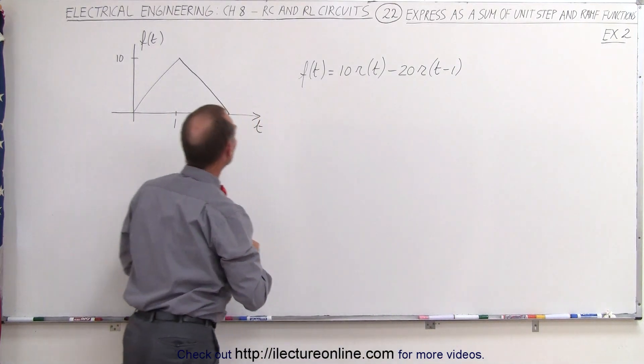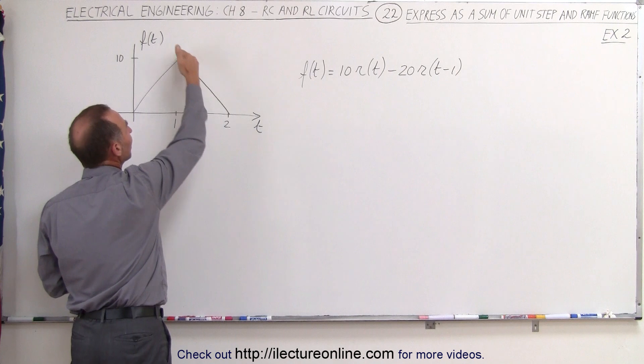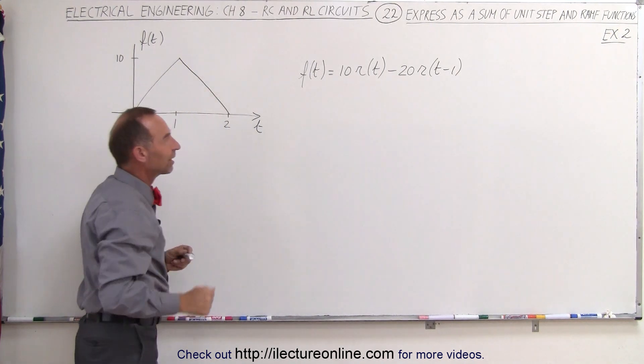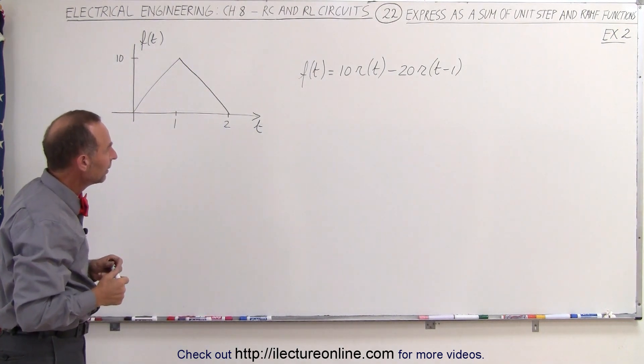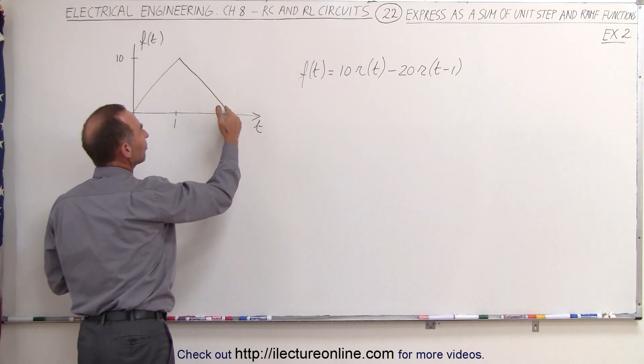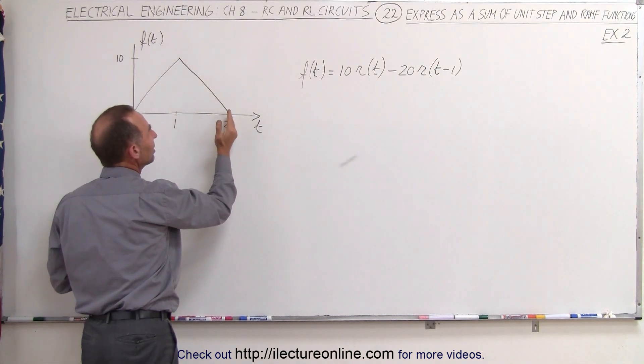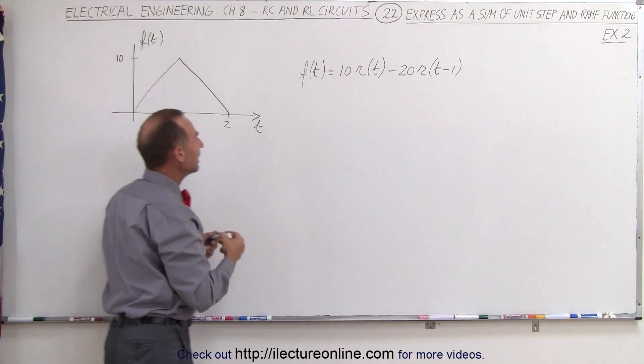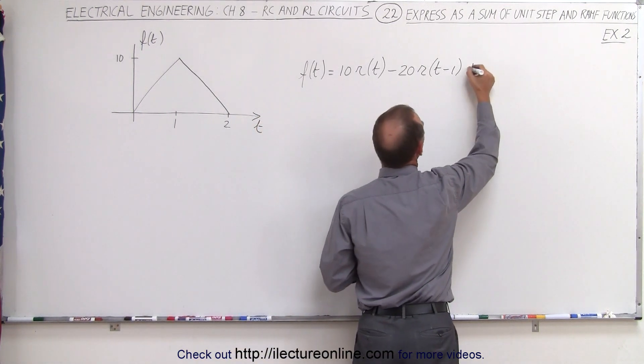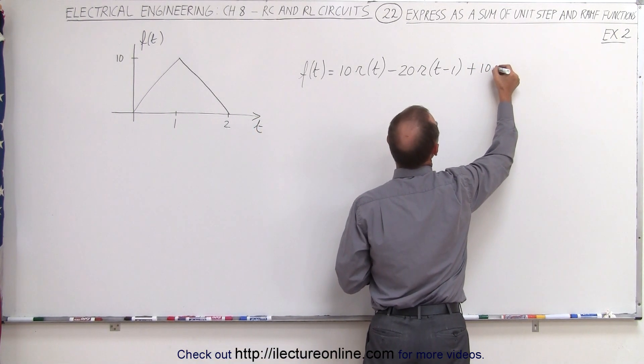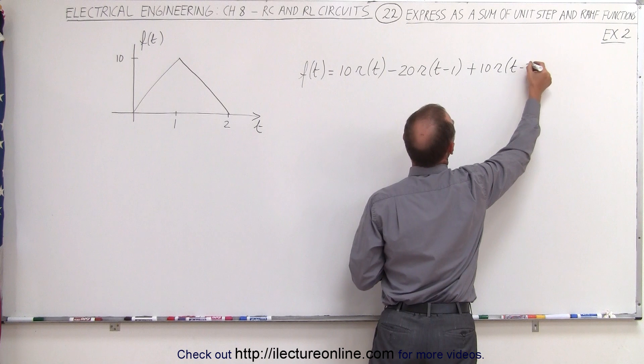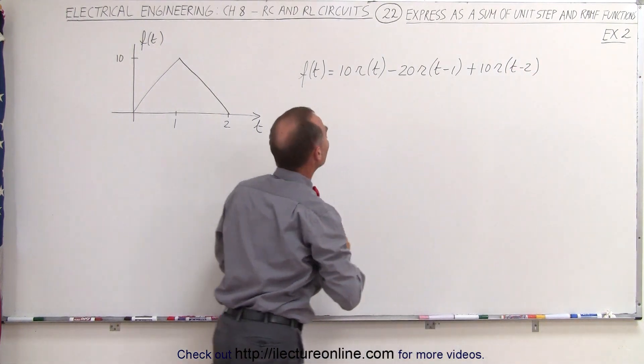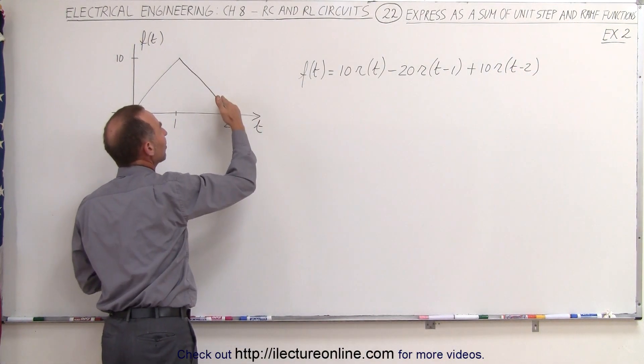You need the first minus ten to negate the first function, you need the second minus ten to give you the second function. Now, you want to negate the second function starting at t equals two seconds, so now you need to add another plus ten times the RAM function at t minus two. That would now negate the negative slope of the second function.